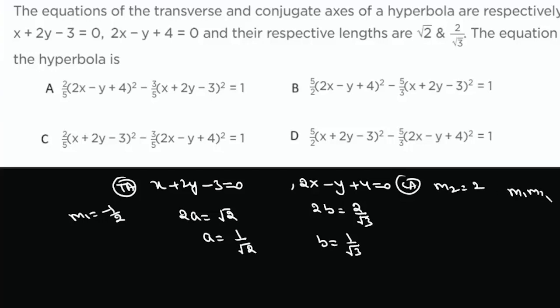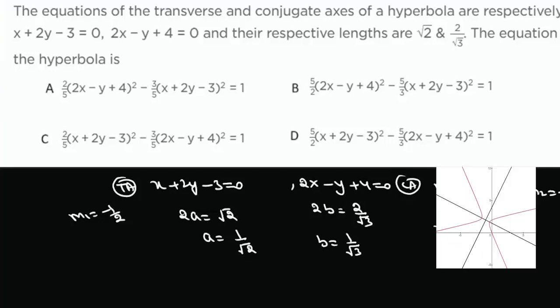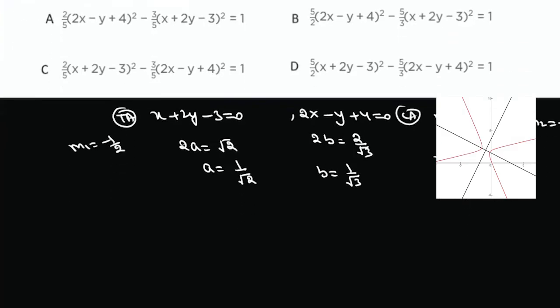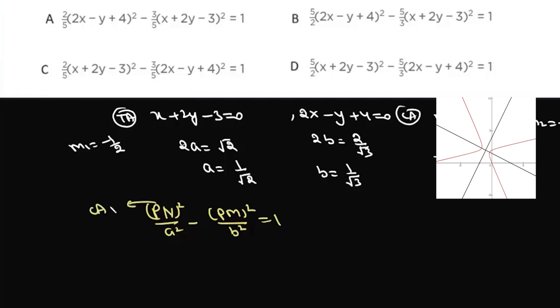The slope of the transverse axis line is -1/2 and the conjugate axis line is 2, so m1·m2 = -1 — the two axes are perpendicular. The equation of the hyperbola is given by PN²/a² - PM²/b² = 1, where PN is the distance from the conjugate axis and PM is the distance from the transverse axis.